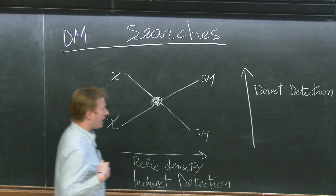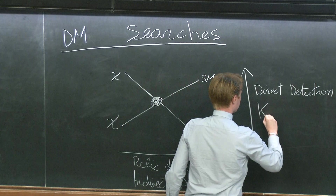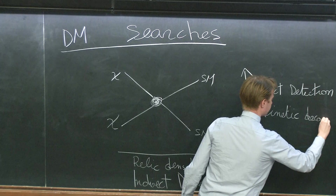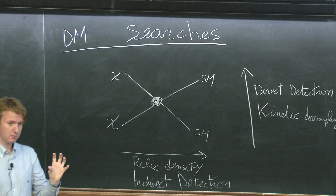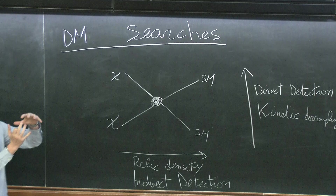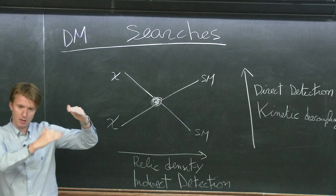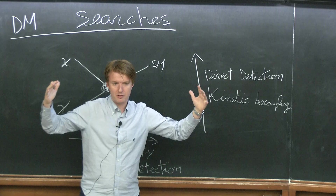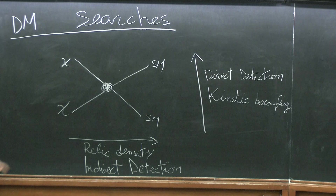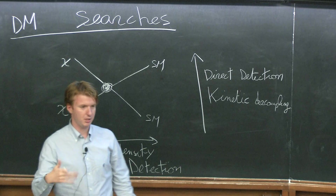This is also the process that sets kinetic decoupling in the early universe. We saw that when Γ for annihilation equals Hubble, you get chemical freeze-out and the number density is frozen. But elastic processes can still take place, allowing dark matter and standard model particles to keep the same temperature. This kinetic decoupling sets the scale of the smallest object we can have in the universe.